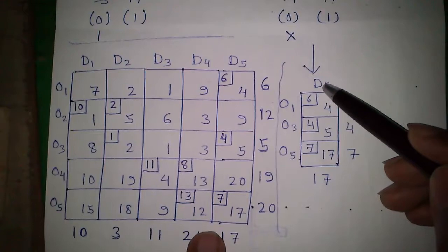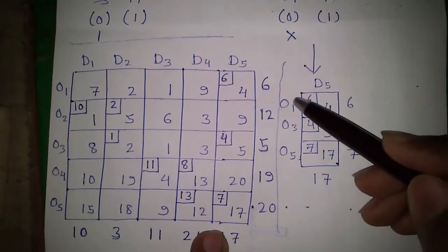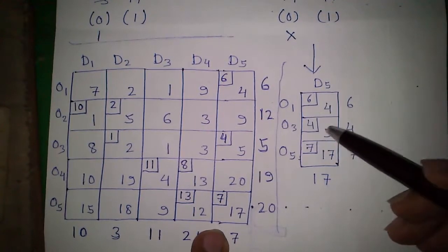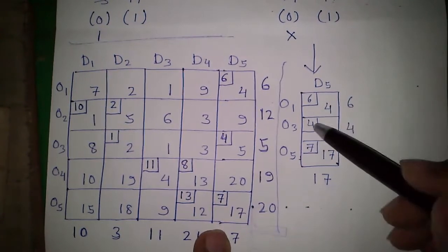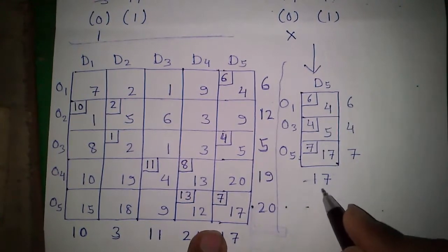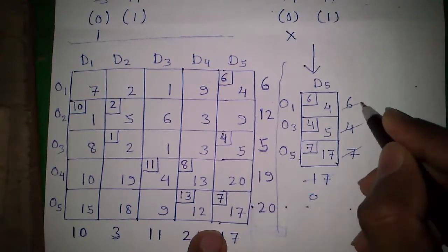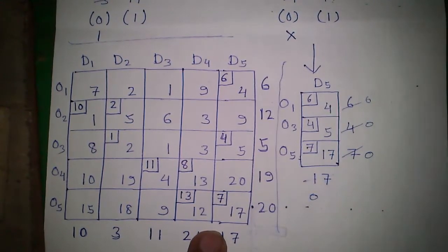Now we have only column D5 remaining with 3 origins. The allocation is very simple — just put the values in. No checking required. All demands become 0 and all supplies become 0. Our allocation is complete.